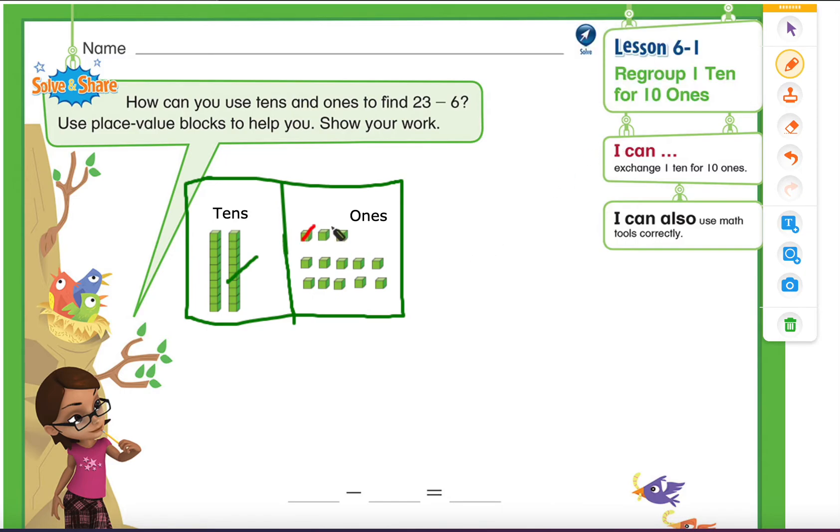And we need to take away 6 ones out of it. So let's do that: 1, 2, 3, 4, 5, 6. So as you have seen, now I am able to take away 6 from 23 before I couldn't because I did not have enough ones. So I had to trade 1 ten for 10 ones. And now I could easily do it.